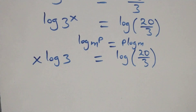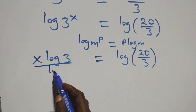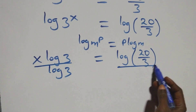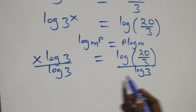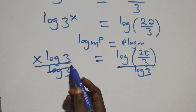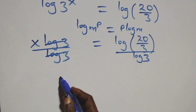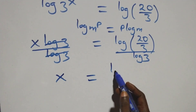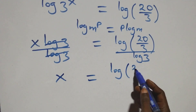The next step: we divide both sides by log 3. So log 3 cancels on the left, and we have x equals log(20/3) over log 3.